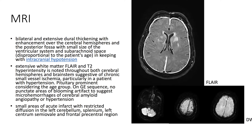There's also a small ventricular system and subarachnoid space. There are extensive white matter FLAIR hyperintensities noted throughout both cerebral hemispheres and brainstem, suggestive of chronic small vessel ischemia, particularly in a patient with hypertension.